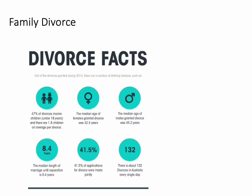Moving on to our next predictor of issues: divorce. In Australia, 47% of divorces involve children, and over half of relationships end in divorce or separation. Children are defined as those under 18, and there are almost two children per divorce. The median age of females granted divorces was 42, the median marriage length was about eight years, and 41% of applications were made jointly. There are about 132 divorces in Australia every single day.